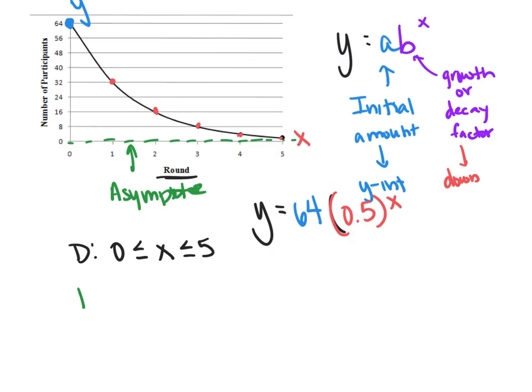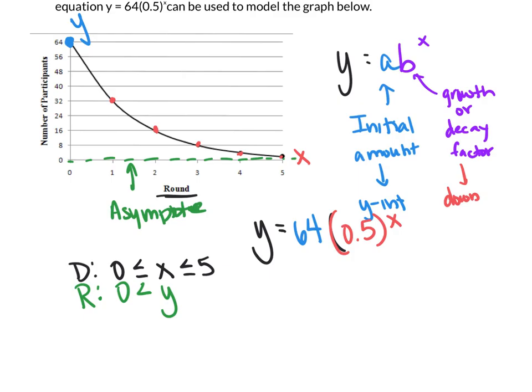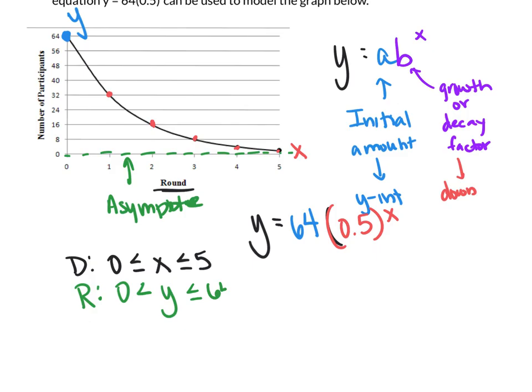We're gonna say the range of this function starts at 0, but you can't include 0, and we're gonna call it the y variable. And y is gonna go all the way up to, well, how many people did you initially have in this tournament? There was 64. So we'll go from 0 to 64. I'm going to include the 64 here.